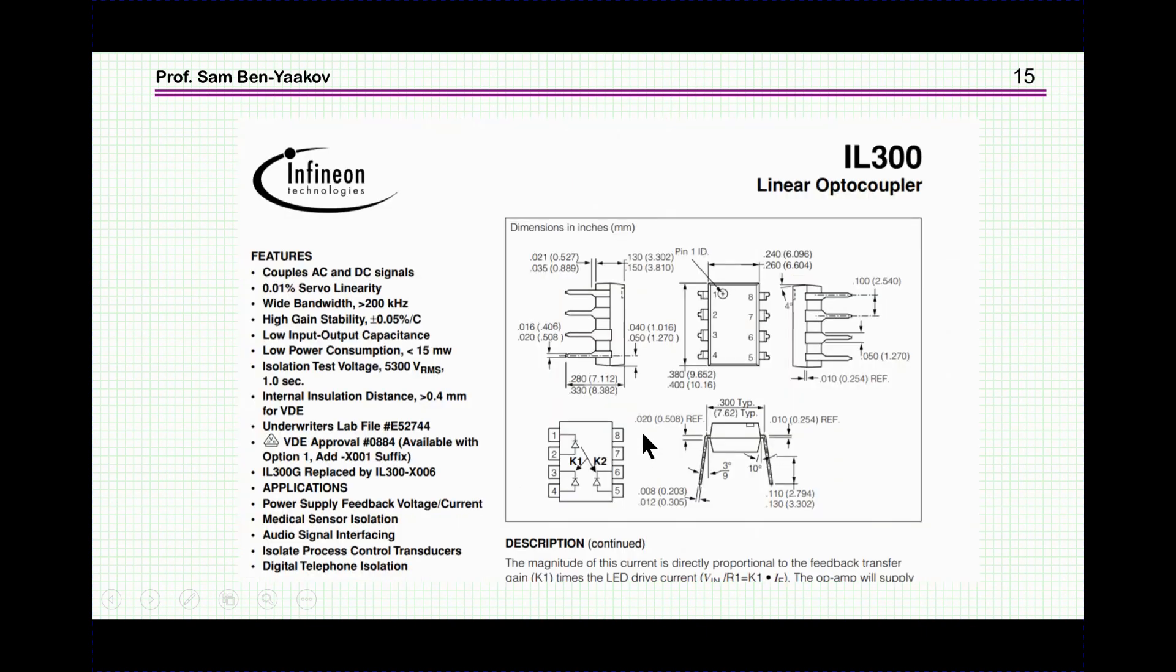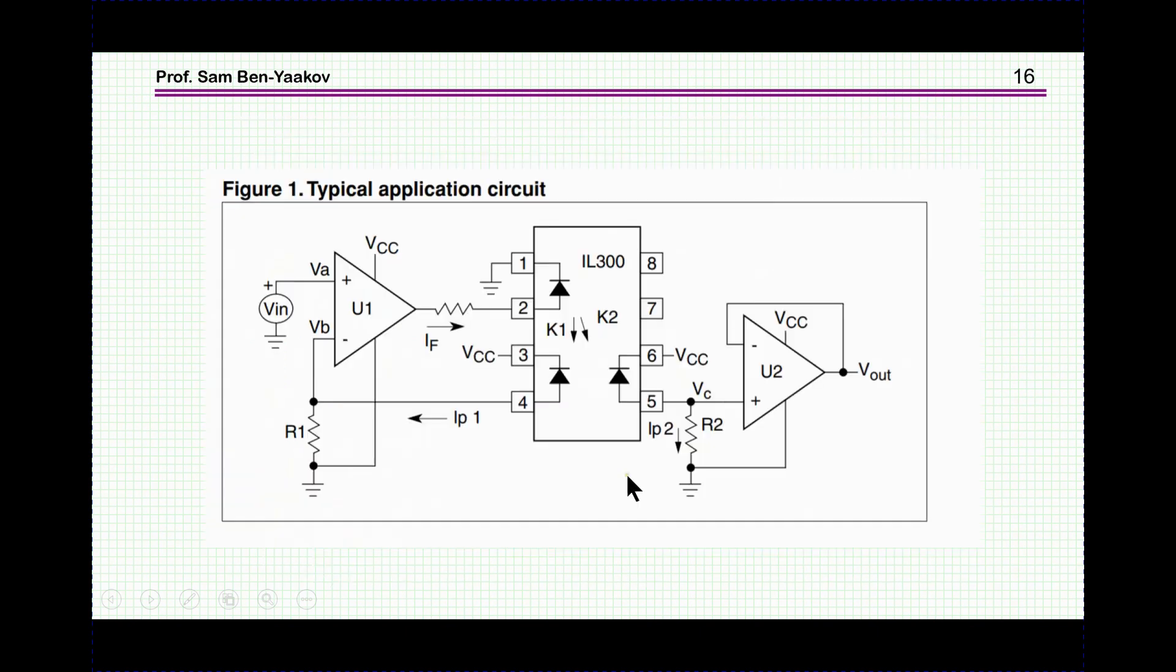Now interestingly enough, there is today a device which not exactly, but has a similar idea exploring a similar concept by using an LED and photodiode. This is the IL-300 of Infineon. It includes two photodiodes which are exposed to the light coming from a single LED. So very similar to what we had before.